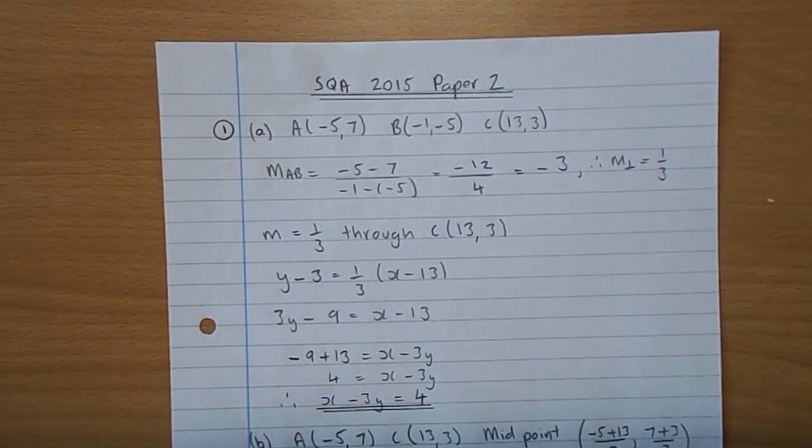Here we have the higher 2015 paper 2, starting off at number 1, where we have a triangle A, which is minus 5, 7, B minus 1, minus 5, and C 13, 3, shown in a diagram.